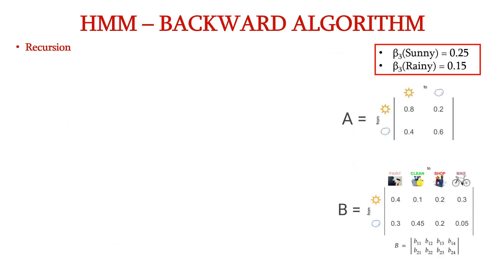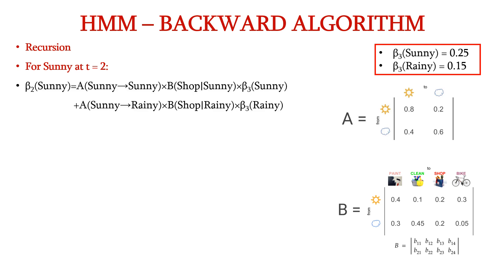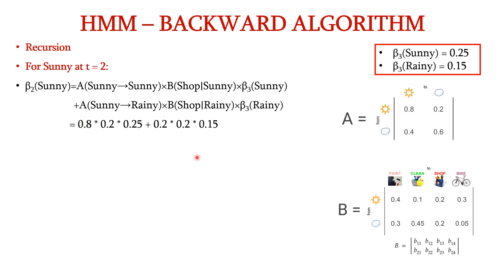Now let us apply the recursion equation for the hidden state sunny at time step t=2. Beta_2(sunny) = a(sunny→sunny) × b(shop|sunny) × beta_3(sunny) + a(sunny→rainy) × b(shop|rainy) × beta_3(rainy). Substituting: 0.8 × 0.2 × 0.25 + 0.2 × 0.2 × 0.15 = 0.046. So beta_2(sunny) = 0.046.